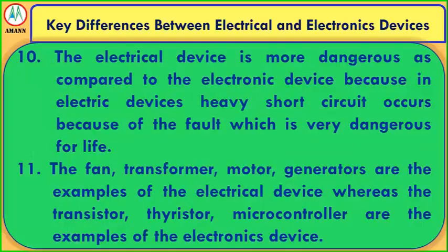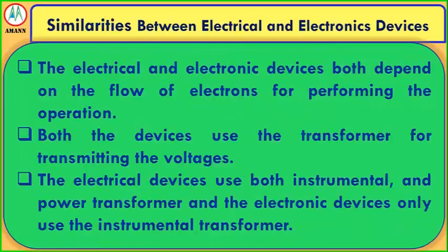Electrical devices are more dangerous compared to electronic devices because in electrical devices, heavy short circuits can occur due to faults, which is very dangerous to life. Examples of electrical devices include the fan, transformer, and motor generators. Examples of electronic devices include the transistor, thyristor, and microcontroller.